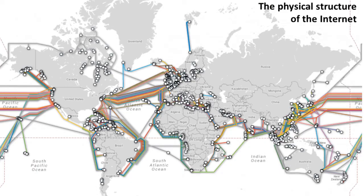A question a lot of students tend to ask when they really get into computing is: what actually is the internet? Well at the end of the day the internet is nothing more than a massive network of connected computers and devices, but that often doesn't satisfy people. What does it physically look like? Are there giant cables running between countries?